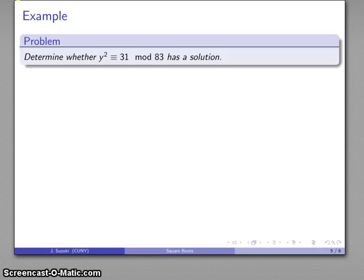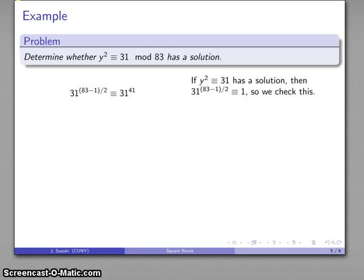Let's take a look at another example. If y squared congruent to 31 has a solution, then 31 to the power of 83 minus 1 over 2 is congruent to 1. We'll check it, and we find it's congruent to 1. Since 31 to the power of 41 is congruent to 1, we know that this condition is satisfied.